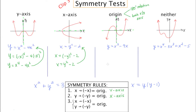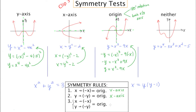To test for origin symmetry, you're going to replace both x with negative x and y with negative y. Negative y is just negative y. Negative x cubed is negative x cubed, and a negative times a negative is a positive. If I multiply through by negative 1 on both sides, the negative y becomes y, and this side becomes x cubed minus 9x — the same as the original. This confirms origin symmetry when replacing both x and y with their negatives yields the original equation.